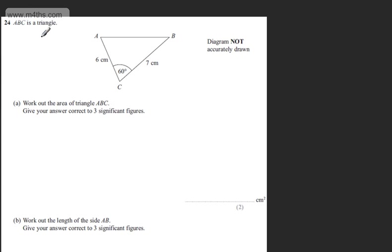This is question 24, and we're told ABC is a triangle. In part A, for two marks, we need to work out the area of triangle ABC. We're asked to give our answer correct to three significant figures.